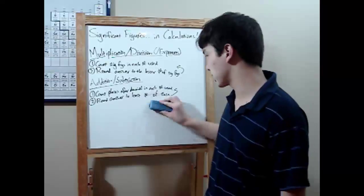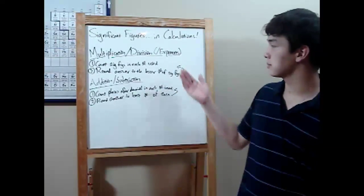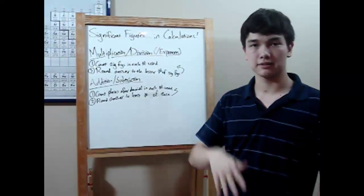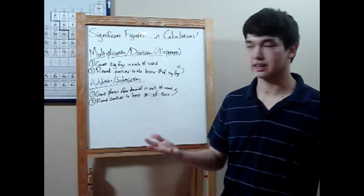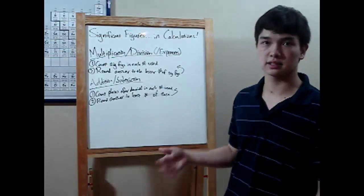Moving on to addition and subtraction. It's similar to the above. Just count the number of places after the decimal in each of the numbers you're adding or subtracting, and then round your answer to the less of those.